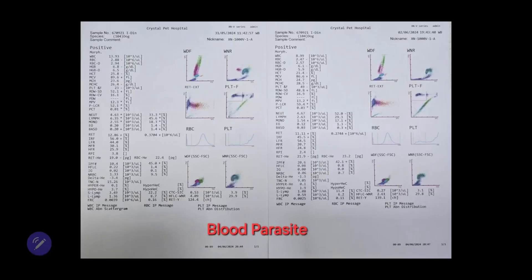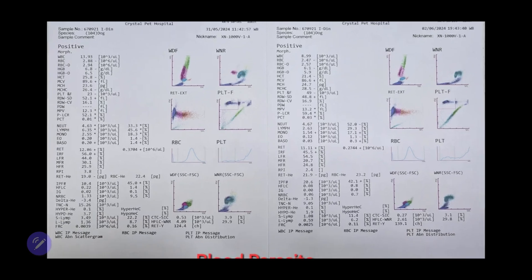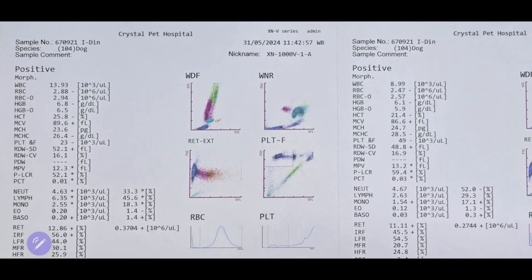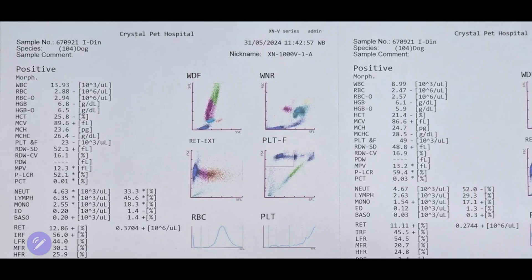This case is interesting. I'm showing this because it's about a dog with a blood parasite that was treated for only three days, resulting in significantly different blood test results. Let's look at the results before treatment. I'll compare them directly for clarity. For the WBC count, you can see it went from 13,000 to 8.99. The red blood cell count slightly decreased from 2.88-2.94 to 2.47-2.57.